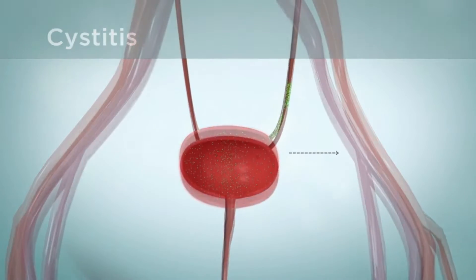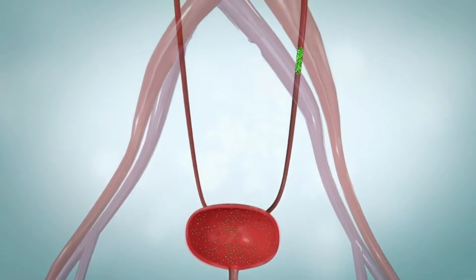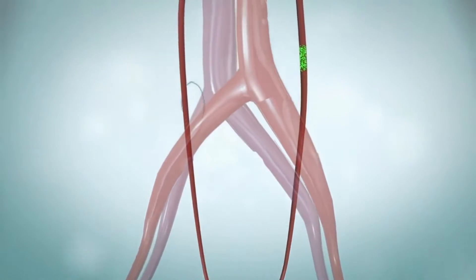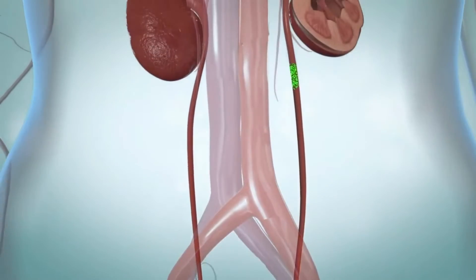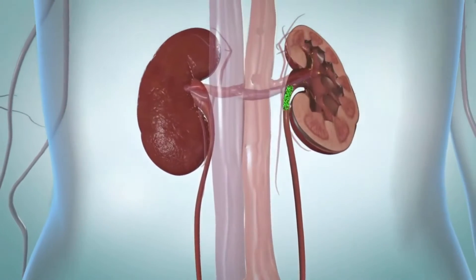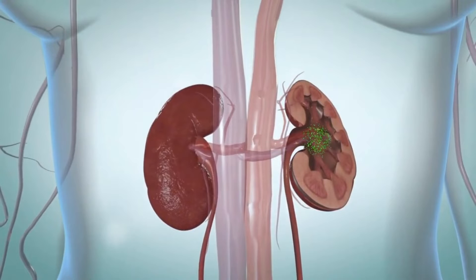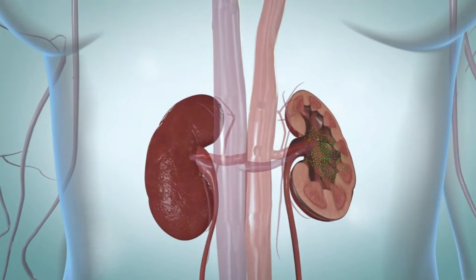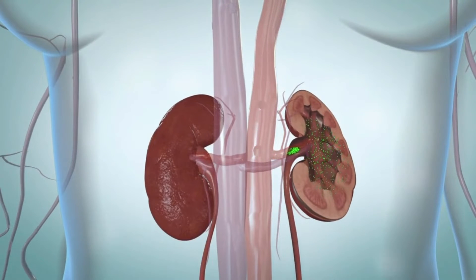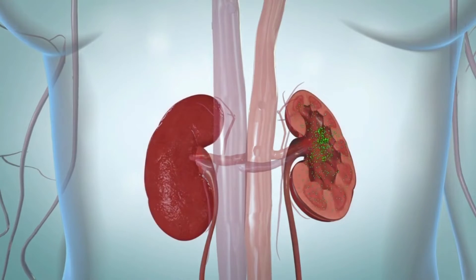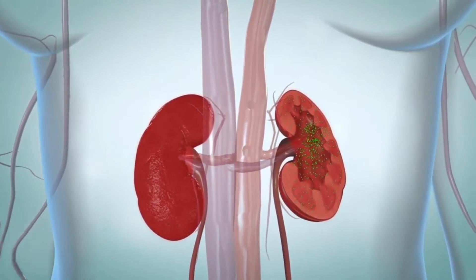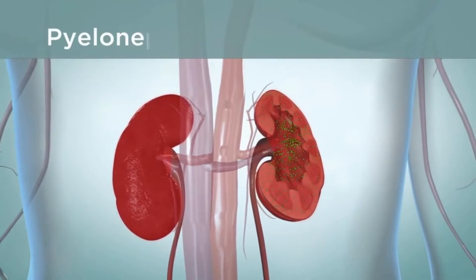But sometimes bacteria or viruses move from the bladder to the kidneys, where urine is made. Bacteria or viruses can also go to the kidneys from other parts of the body through the bloodstream. An infection in the kidney is called pyelonephritis.